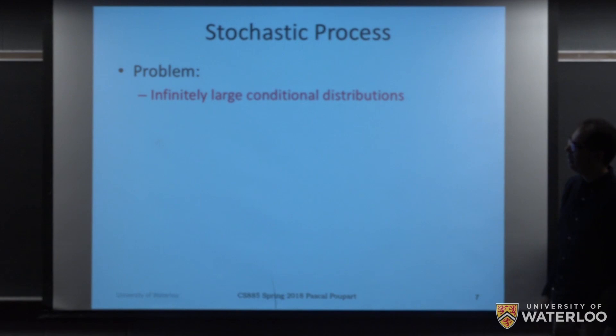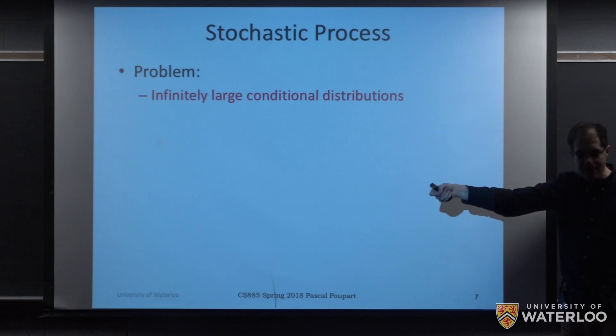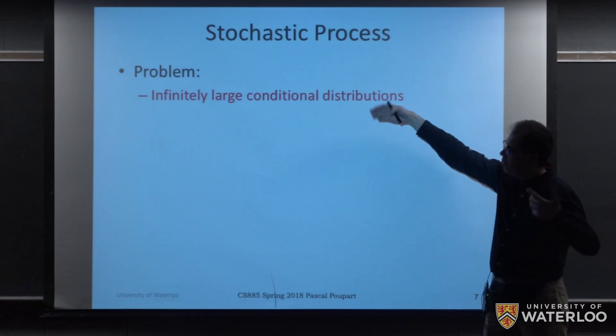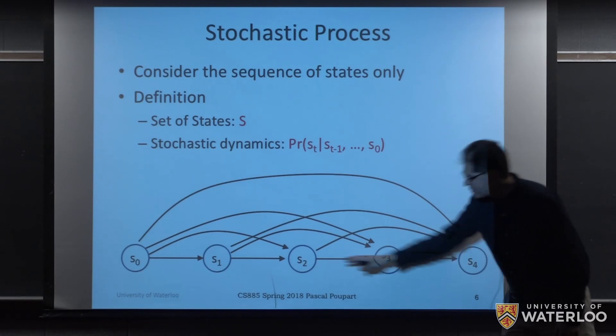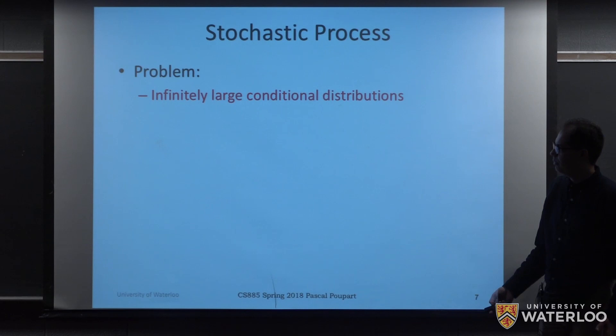There's a problem with the previous picture because if I have a process that is very long, then this conditional distribution that tells me what might be the state at time step t could depend on a number of states before that could be very large. Expressing this type of conditional distribution will be intractable and it might have to be infinitely large. If the process was infinitely long and every state was depending on everything that happened before, then I could not express this.